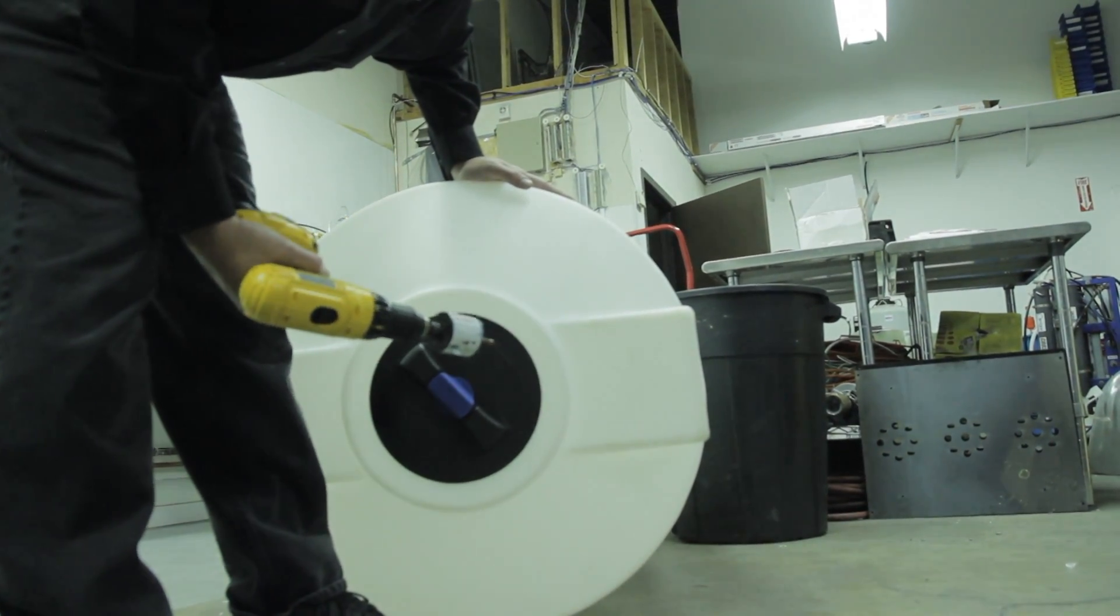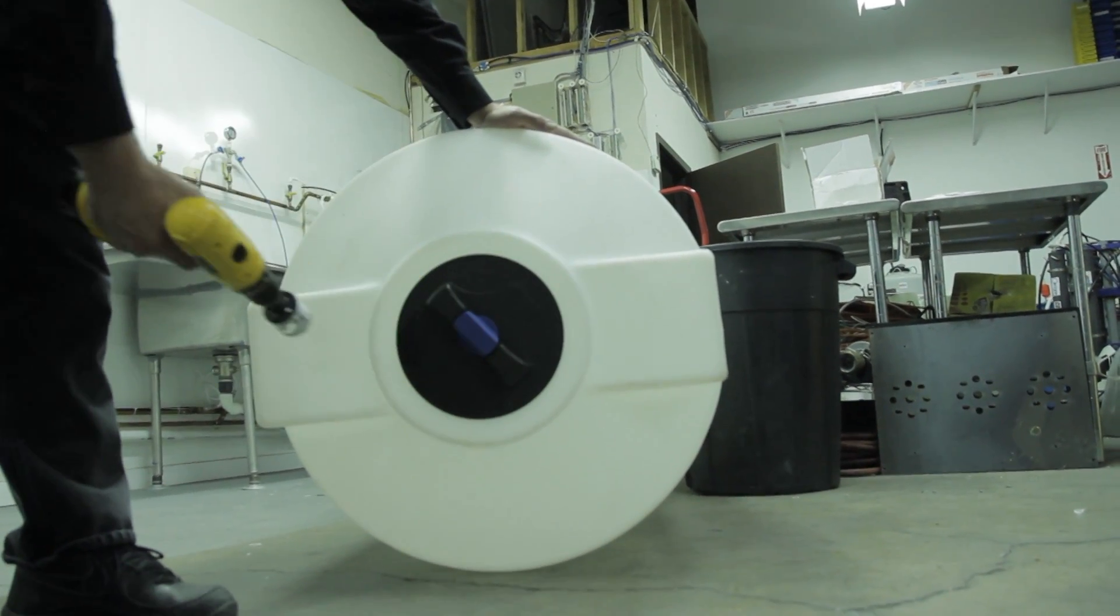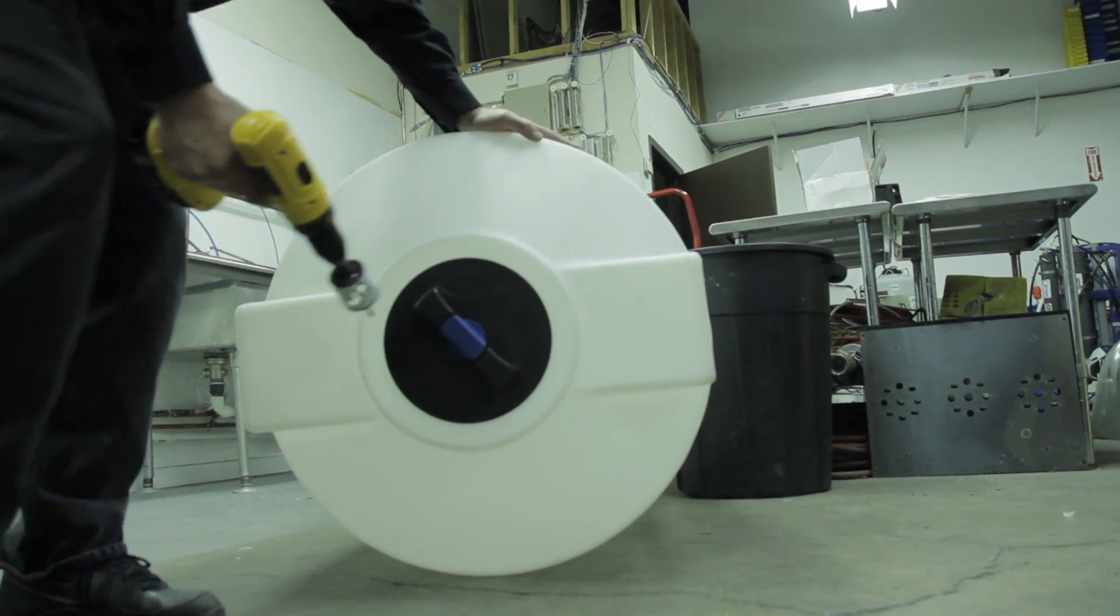So we're just going to start here first. We're going to drill a two-inch hole, and this particular tank has some nice flat areas for us to install this float switch and I'm going to choose one of those.